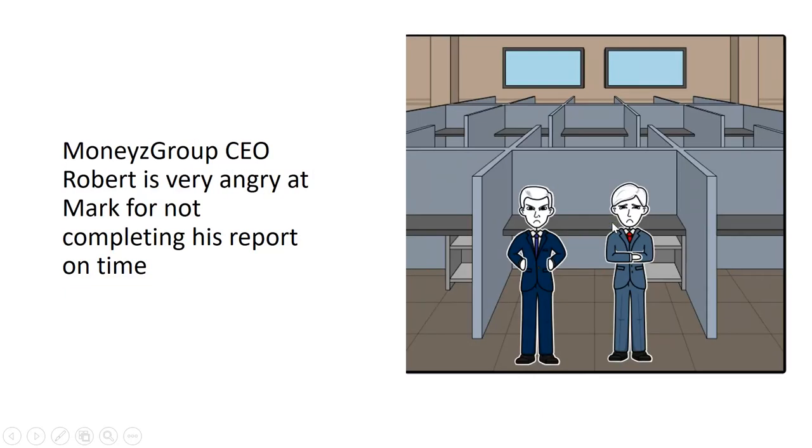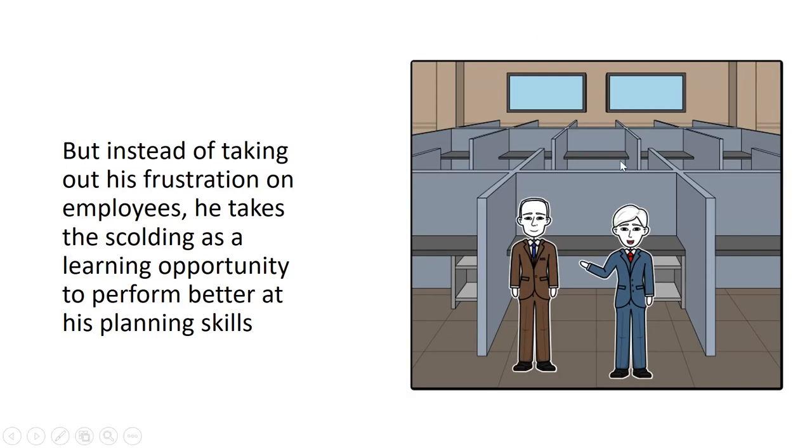Moneys group CEO Robert is very angry at Mark for not completing his report on time. But instead of taking out his frustration on his employees, he takes the scolding as a learning opportunity to perform better at his planning skills.